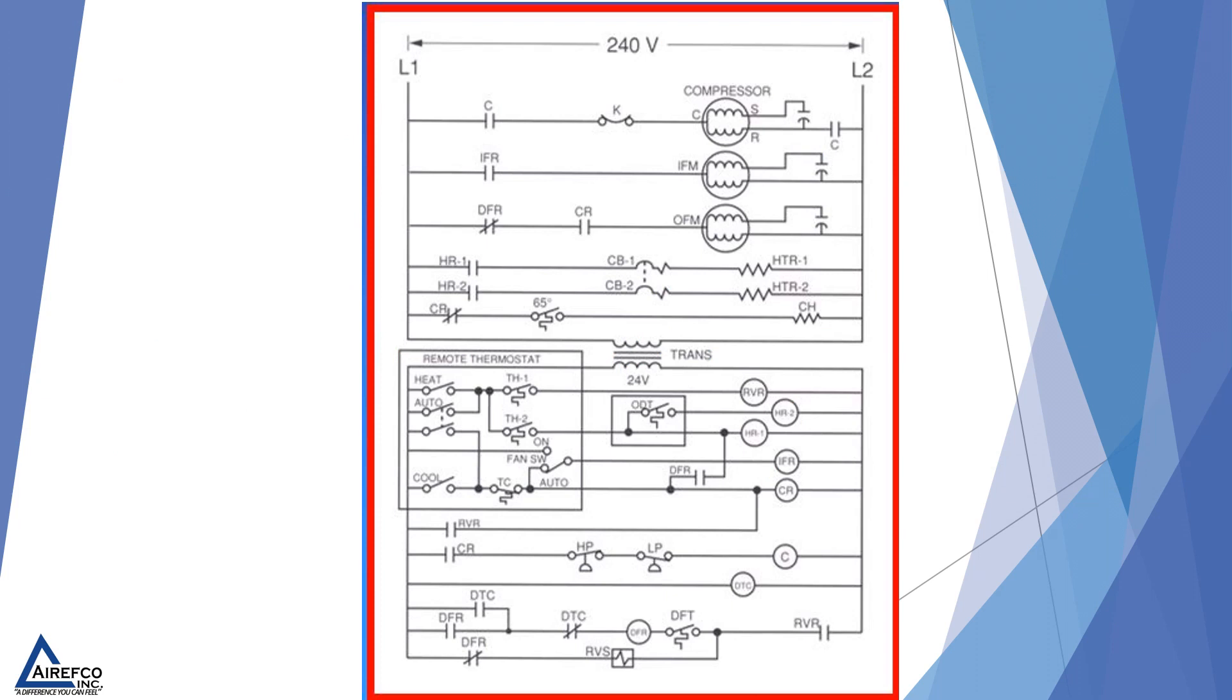This wiring diagram may look familiar to you, as it was on a recent NATE certification test. The question associated with this diagram was: when is the crankcase heater energized on this system? Here we find the symbol for crankcase heat, and we see that it is controlled by the CR relay. When the CR relay is open, which happens during the off cycle, the one contact of the CR relay closes.